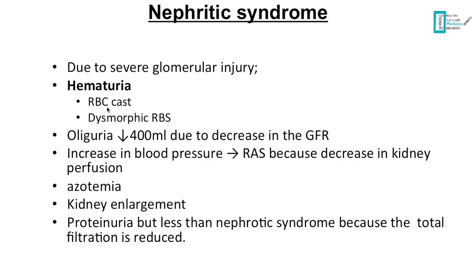We also see RBC casts. The red blood cells, when filtered through the glomerulus into the tubule, become stuck in the tubules. When they accumulate and the filtered fluid washes them, we see a cylindrical shape under the microscope — a cylindrical shape of dysmorphic RBCs. This is basically what an RBC cast is.